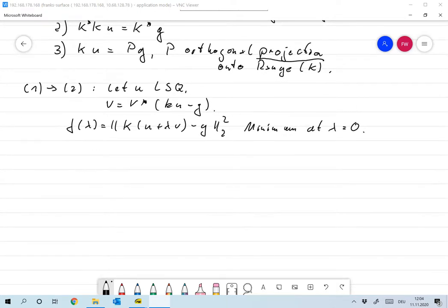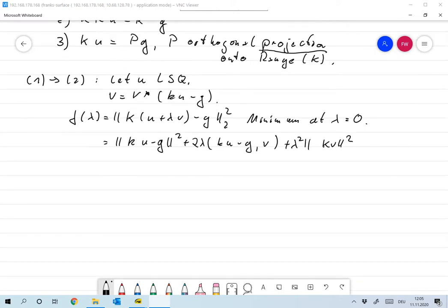So let's say what this is. This is just the norm of ku minus g squared plus two times the scalar product of ku minus g and lambda times kv, plus the norm of lambda kv squared. Since this has a minimum at lambda equals zero and everything is differentiable in lambda, we have that f prime of zero is zero, which implies that the scalar product of ku minus g and v is zero.